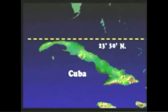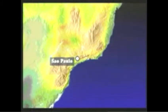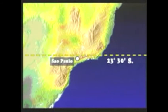For example, we could say that the northern edge of Cuba lies at 23 degrees 30 minutes northern latitude, and that São Paulo, Brazil lies at 23 degrees 30 minutes or 23 and one-half degrees southern latitude.